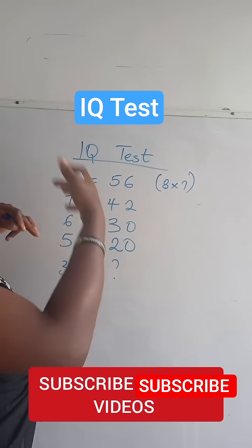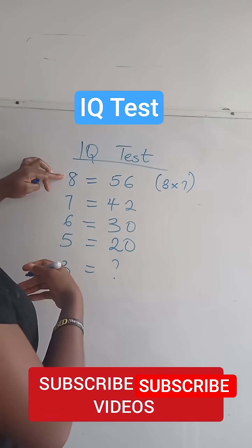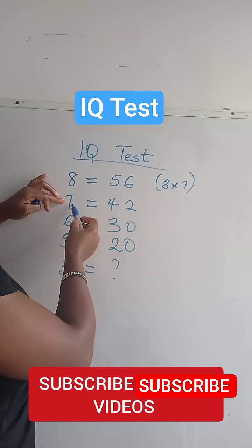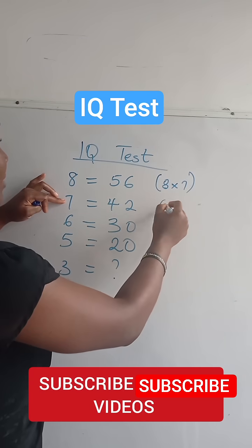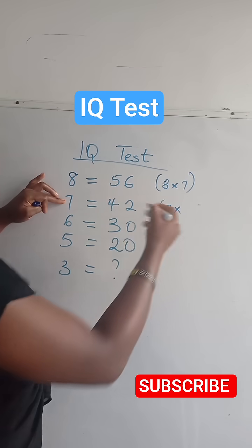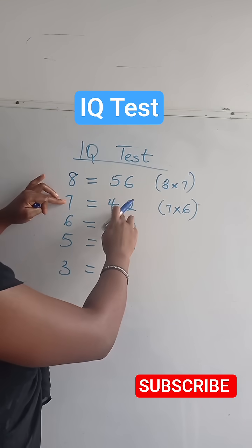So whatever number you have, you count down. So 8 times 7, and here we have 7 times, count down which is 6, that gives us 42.